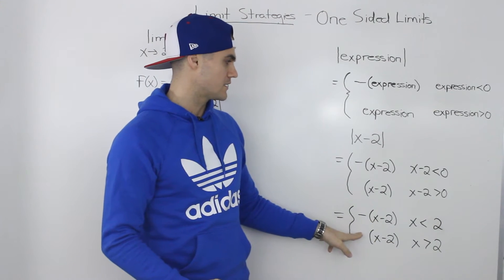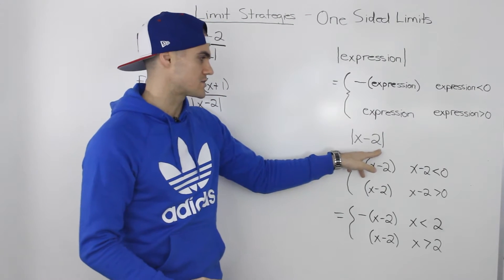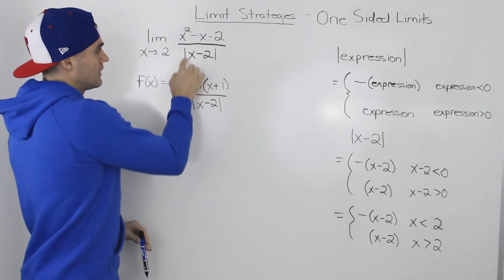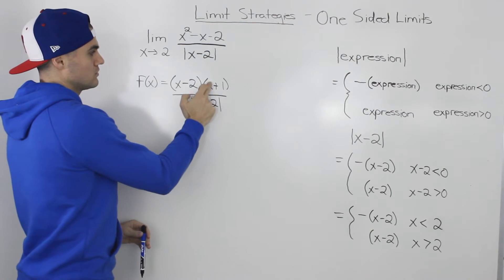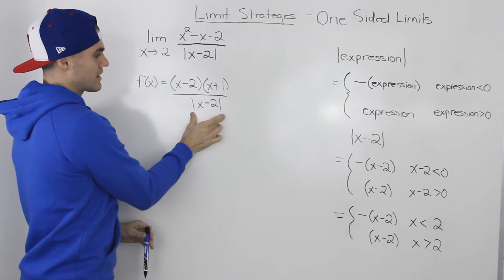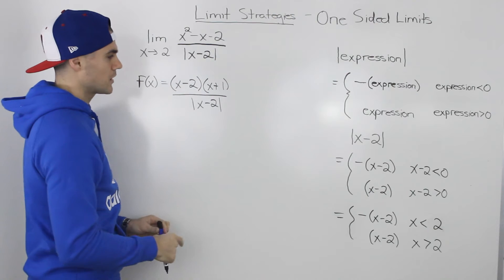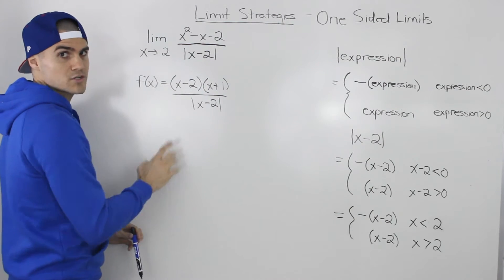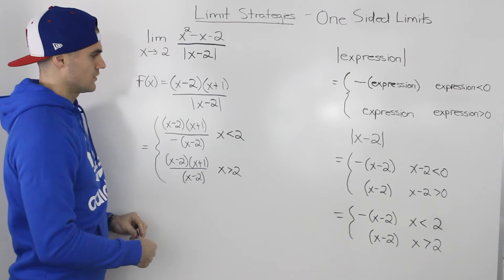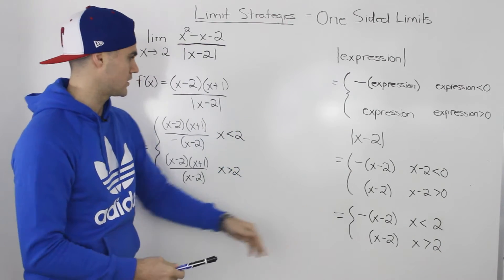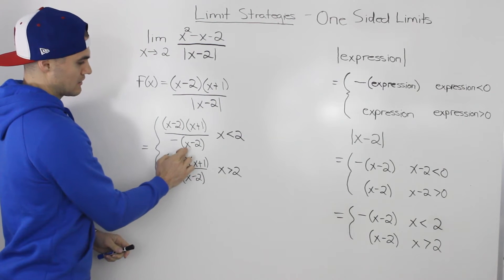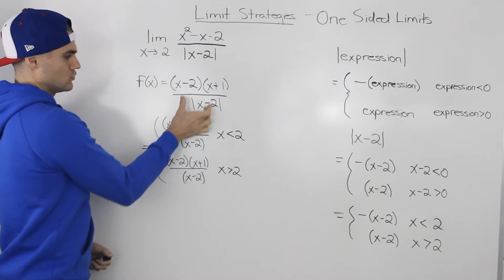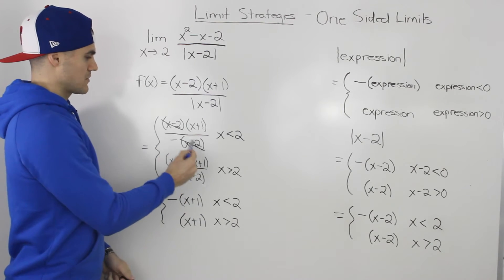Now that we have a simplified piecewise function for the absolute value of x minus two, let's incorporate it into the original expression. Notice that the numerator factors into (x minus two)(x plus one), and we're still dividing by the absolute value of x minus two in the denominator. Substituting our piecewise, the (x minus two) terms cancel in both pieces.